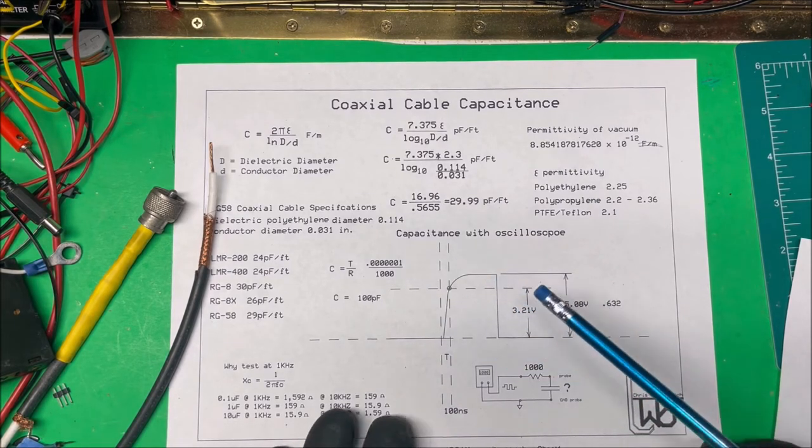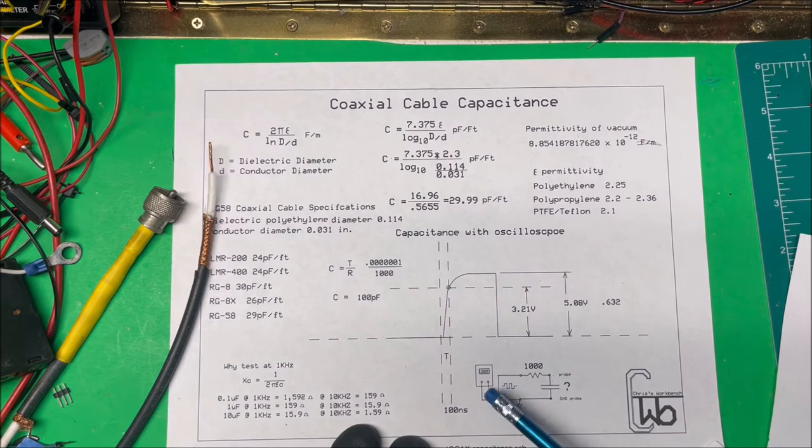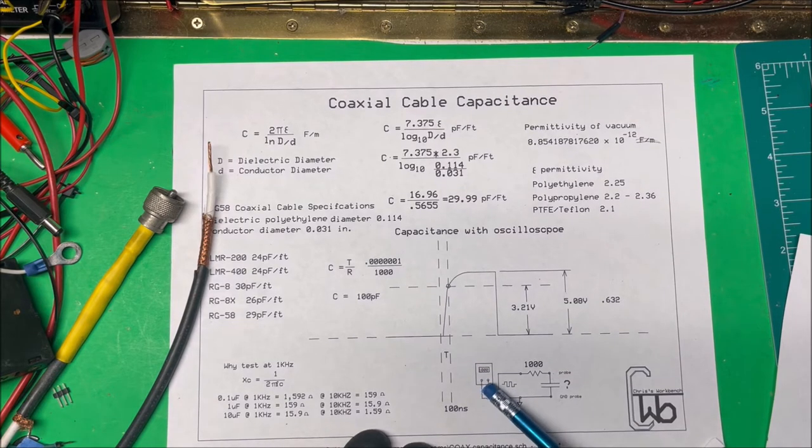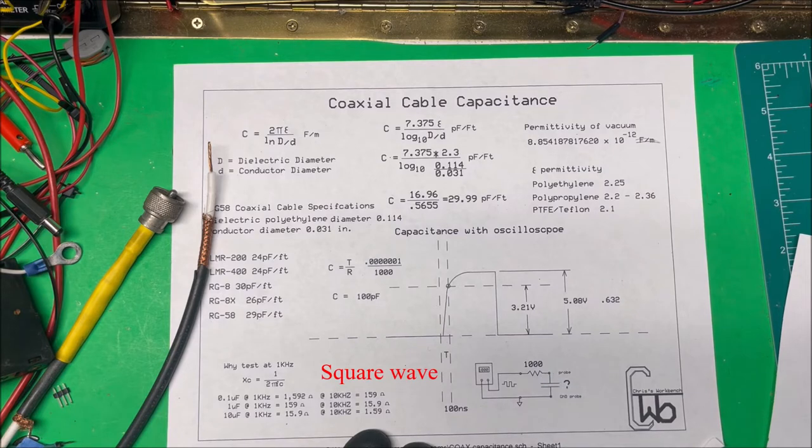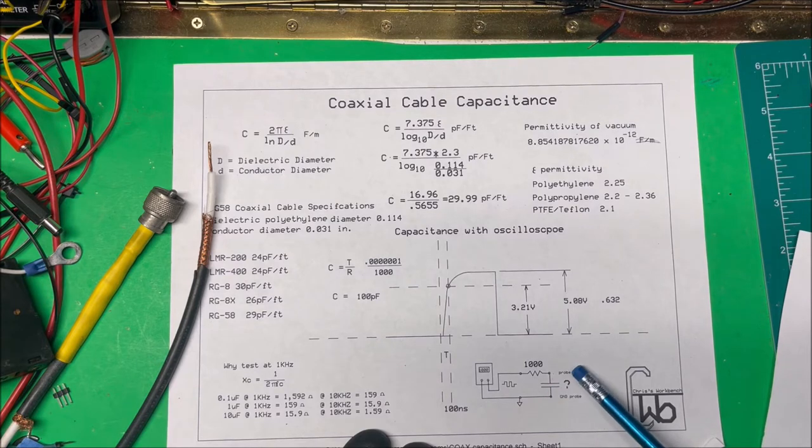So on the oscilloscope, what I did is I have my function generator, and I have it set at 1 kilohertz, and then I have a 1,000 ohm resistor, and this is going to be my RC time constant here. And so I have my unknown capacitor here, and I have my oscilloscope probe here, and the ground probe down here.